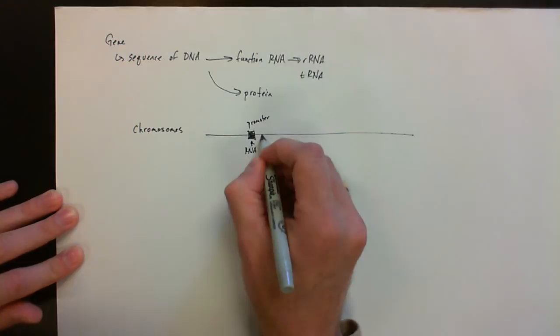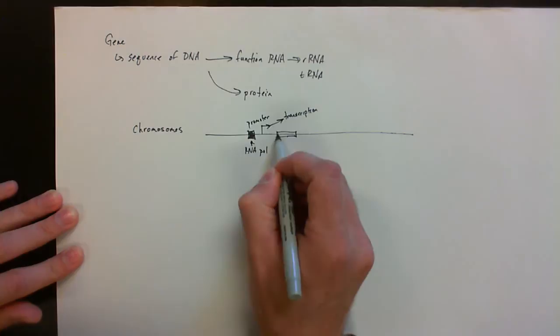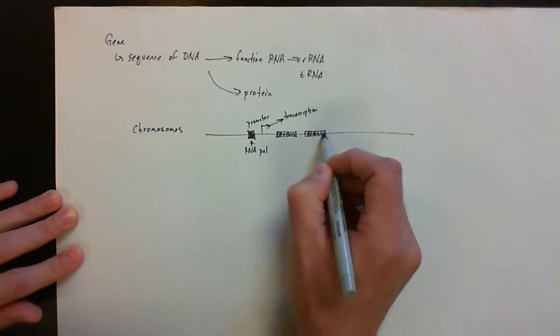So transcription, remember, is the process of going from DNA to RNA. And then structurally, that gene is going to be made up of bits and pieces, and this is primarily found in the eukaryotic cells, what we call introns and exons.